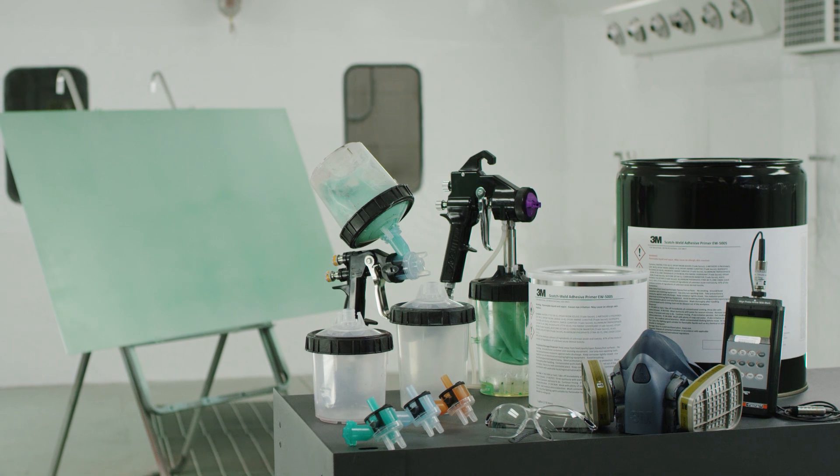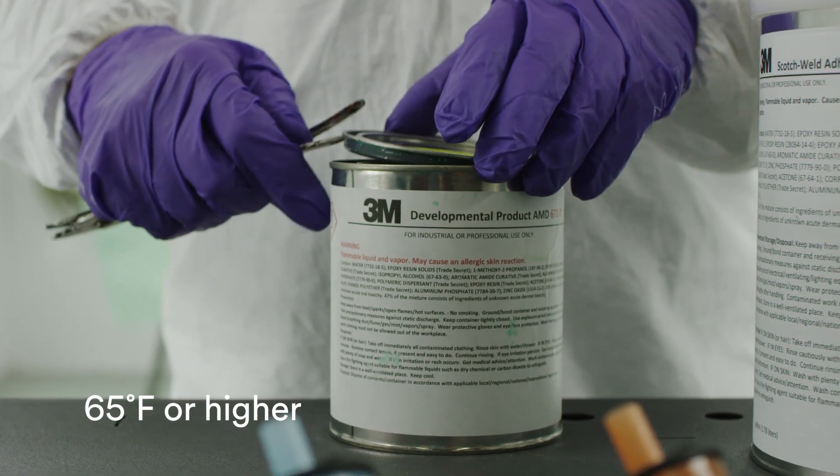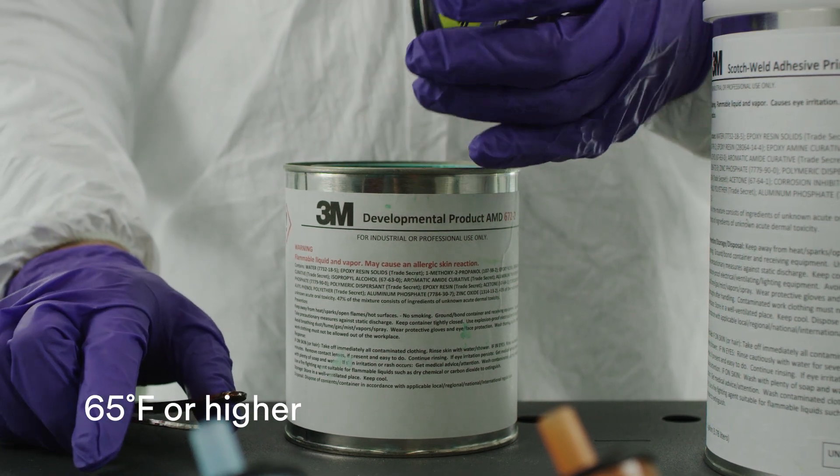Before you spray the EW5005, let the primer warm up to ambient temperature, ideally 65 degrees Fahrenheit or higher, but not more than 95 degrees Fahrenheit.